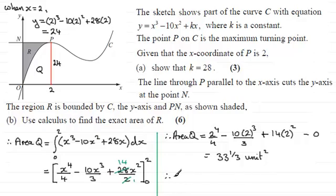Now when it comes to the area then of R, the area of R is going to be the area of the rectangle, which is going to be 2 times 24, or 48. And then we take away 33 and 1 third. And what do we get? Well it turns out to be 14 and 2 thirds, 14 and 2 thirds unit squared.